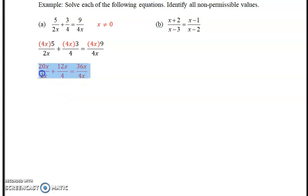So 20x divided by 2x simplifies nicely: 20 divided by 2 is 10, x divided by x is eliminated. Plus 12x divided by 4 is 3x. Equals 36x divided by 4x: 36 divided by 4 is 9, x divided by x is gone. So we get 10 + 3x = 9. Subtract 10 from both sides to get 3x = -1. Divide both sides by 3, and x equals negative 1/3.